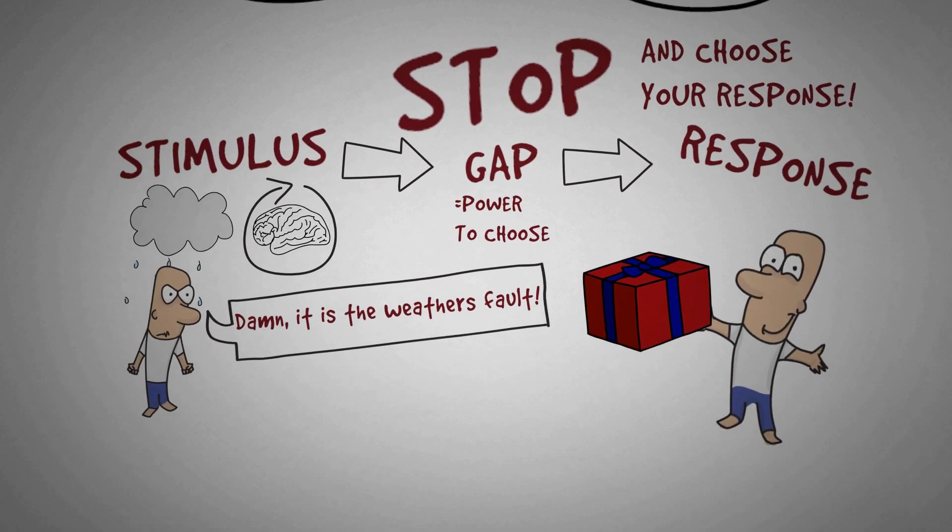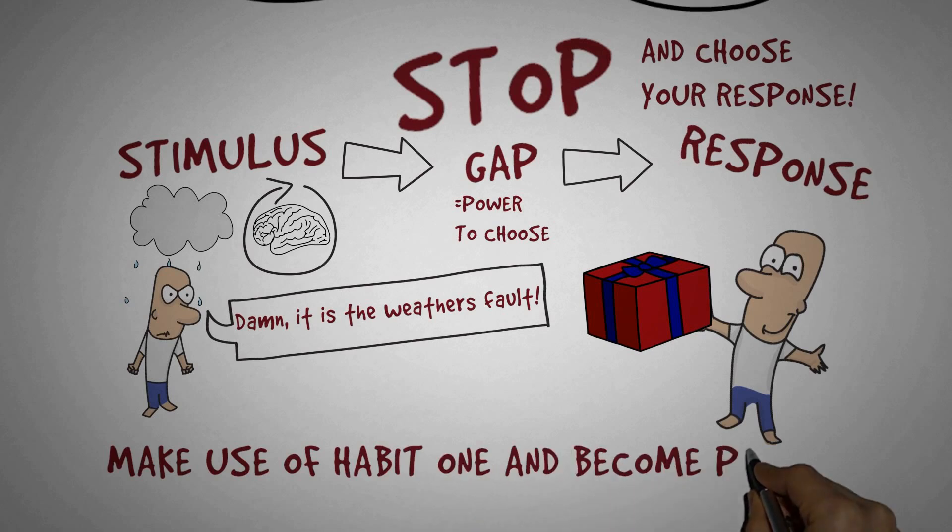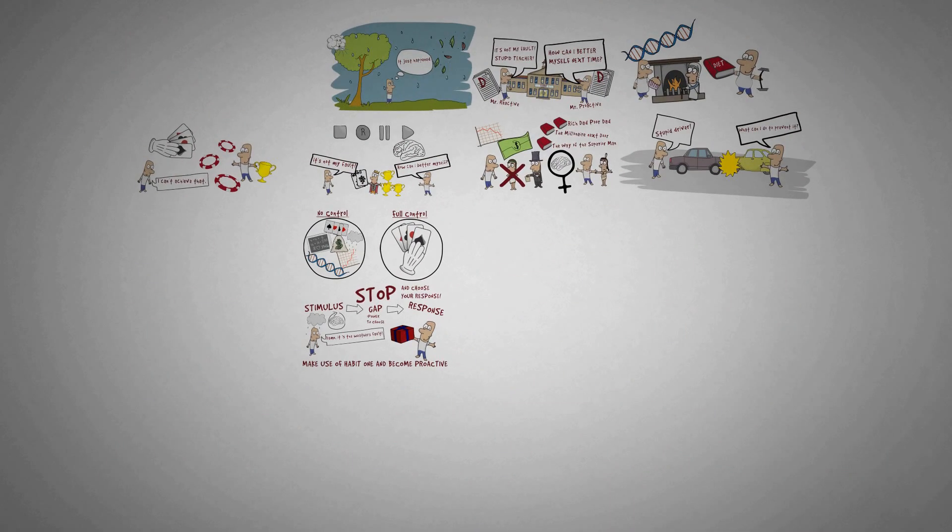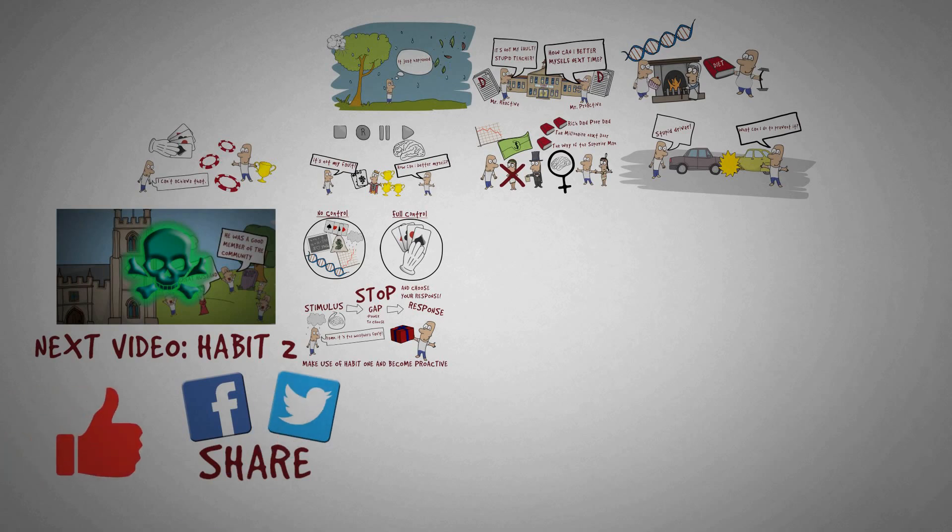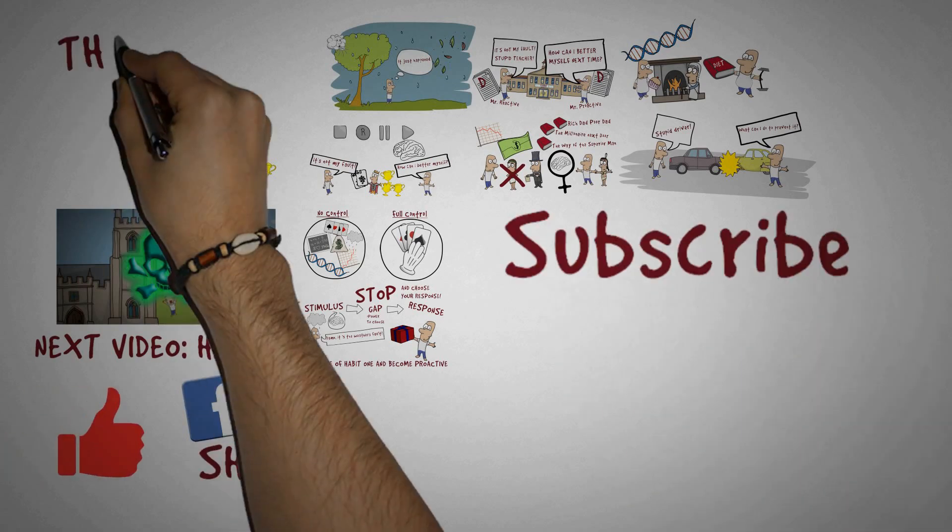So don't waste your gift—make use of Habit 1 and become proactive. This was my video on Habit 1: Be Proactive. Click here to watch my video on Habit 2: Begin with the End in Mind. Feel free to share this video with a friend who this could help. If you like this video, click the like button and subscribe for more. Thanks for watching.